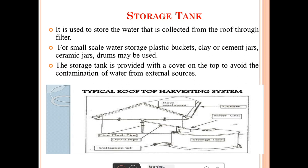The last component is the storage tank. The storage tank is used to store the water collected from the roof through the filter. For small scale, storage using plastic buckets, clay or cement jars, ceramic jars, or drums may be used. For large scale, rectangular or circular storage tanks made of PCC or RCC are used. The storage tank is provided with a cover on top to avoid contamination of water from external sources.